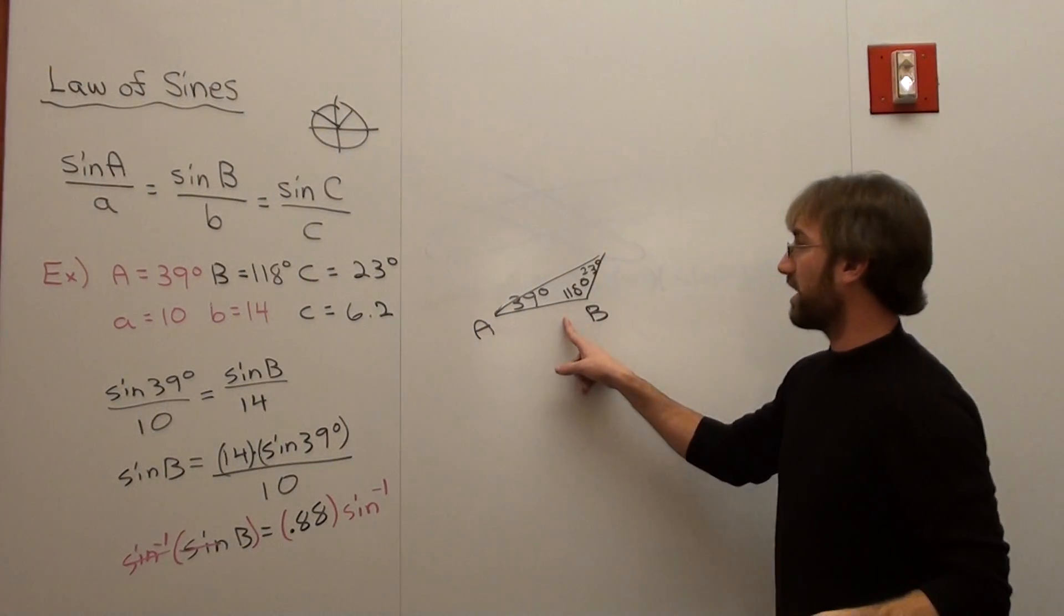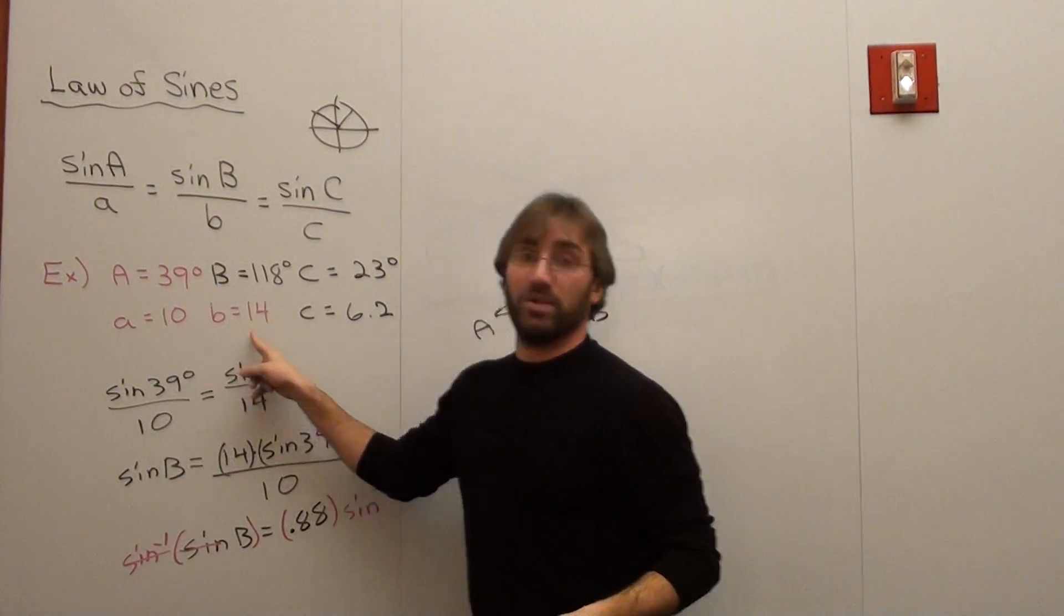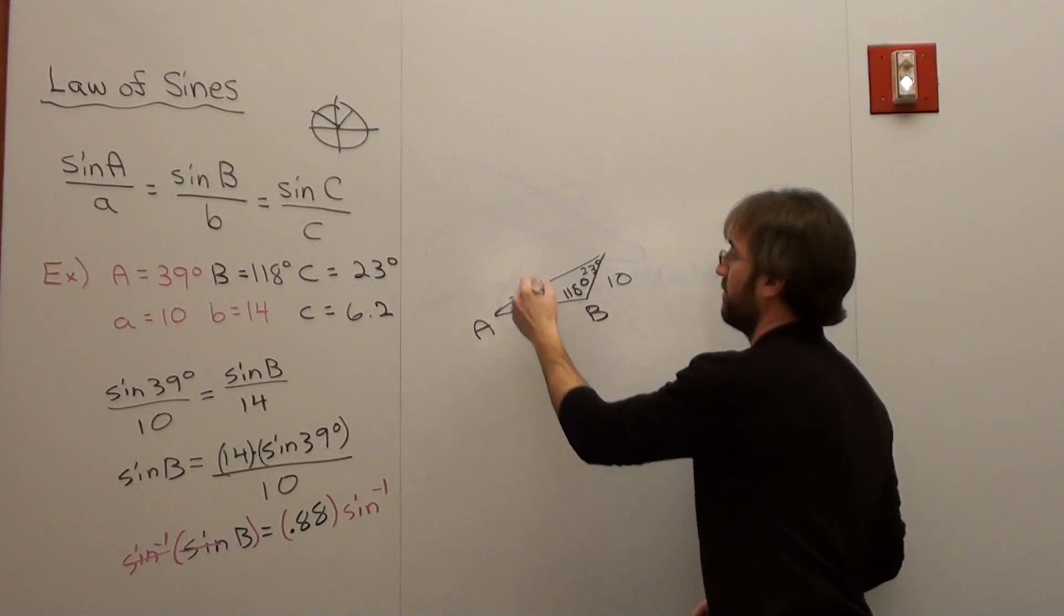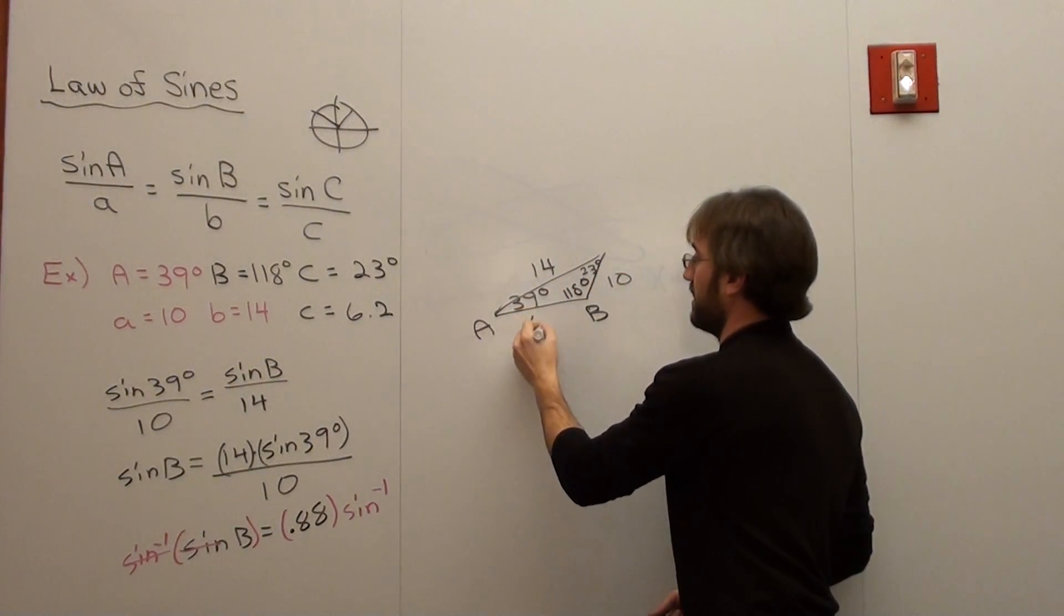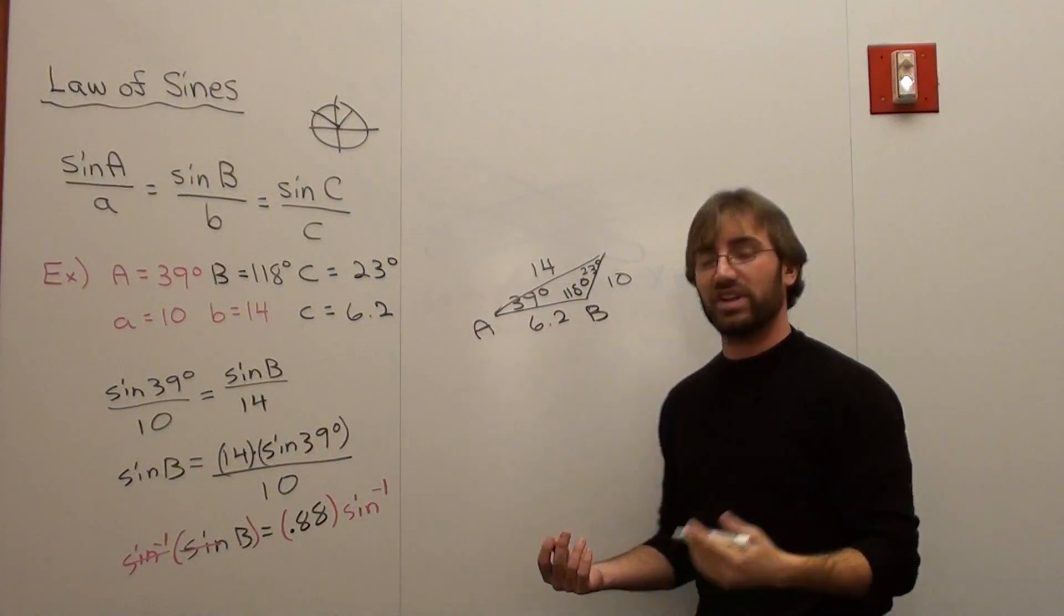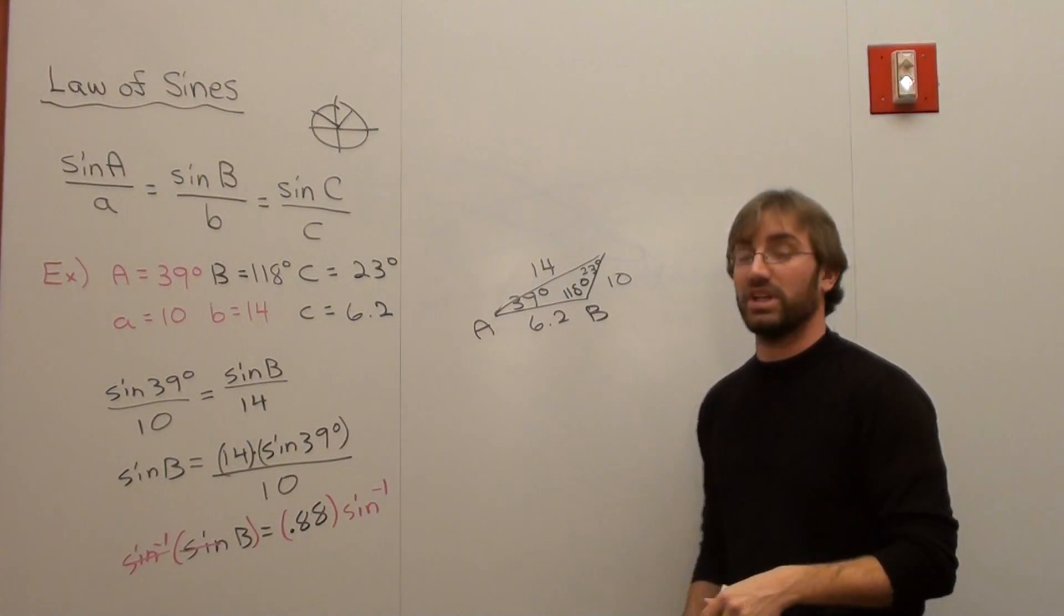B is 118 and C is 23. I can form a triangle like this given these three parameters, where A is about 10, B is 14, and C is 6.2. Not drawn perfectly to scale, unfortunately, but it is what it is.